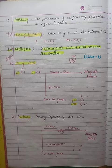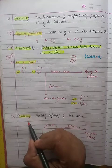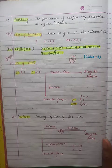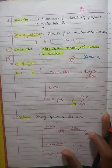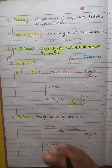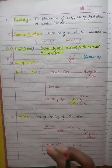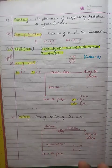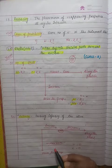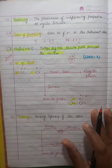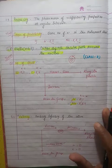The next topic is valency. As you all know, valency is the combining capacity of the atom. Looking at the trend: as we go down the group, valency remains the same. You can recall that group one elements have valency one — so in a particular group, valency remains the same.